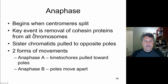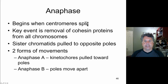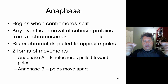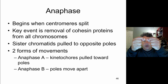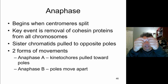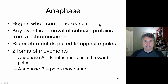Anaphase occurs when a signal is emanated from the kinetochores. The key result of that signaling is the removal of cohesin proteins from the chromosomes — the cohesin proteins that cause sister chromatids to adhere to one another are completely removed. The tension on the chromatids from their connection to kinetochore microtubules then pulls the chromatids apart once the cohesin holding them together is digested.